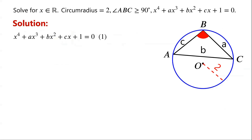From equation 1, it is evident that x is less than 0. Because if x is greater than or equal to 0, then the left side of equation 1 is greater than or equal to 1, which does not equal the right side of equation 1.